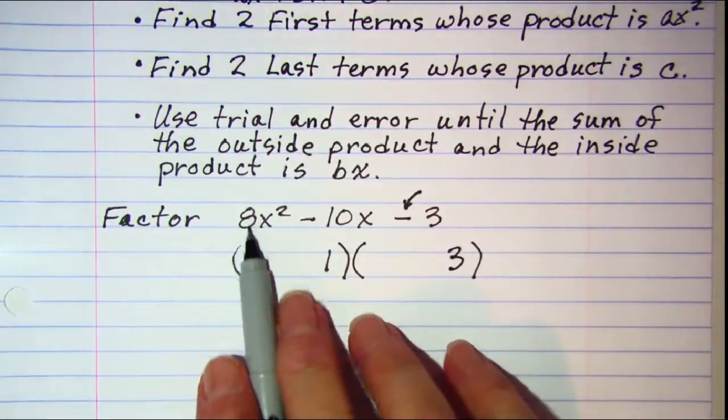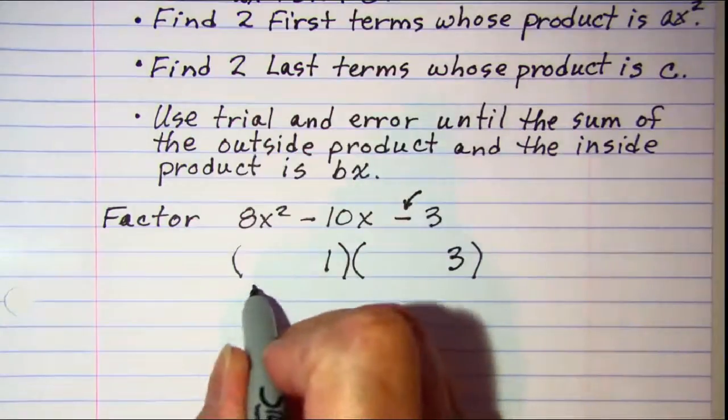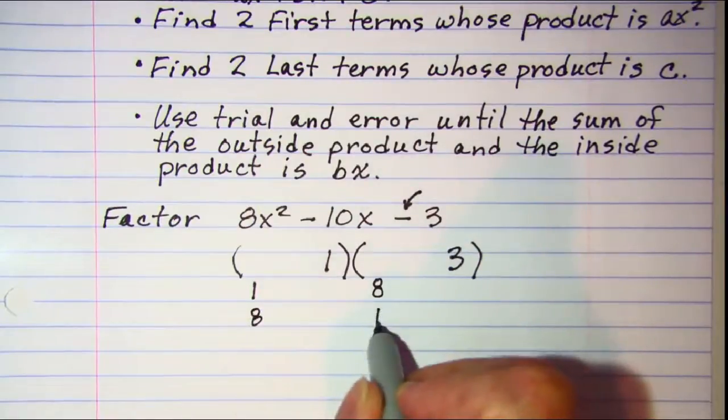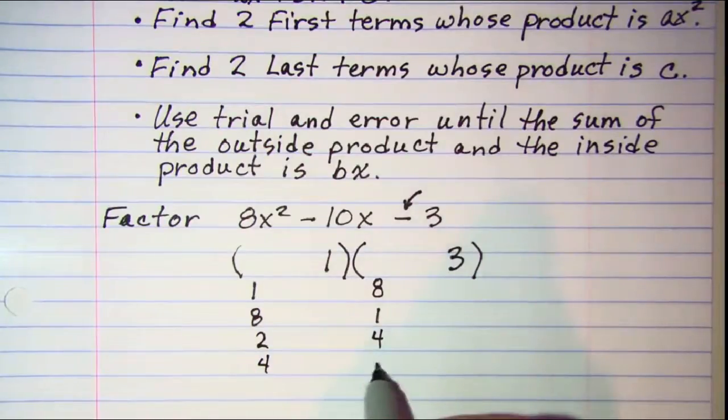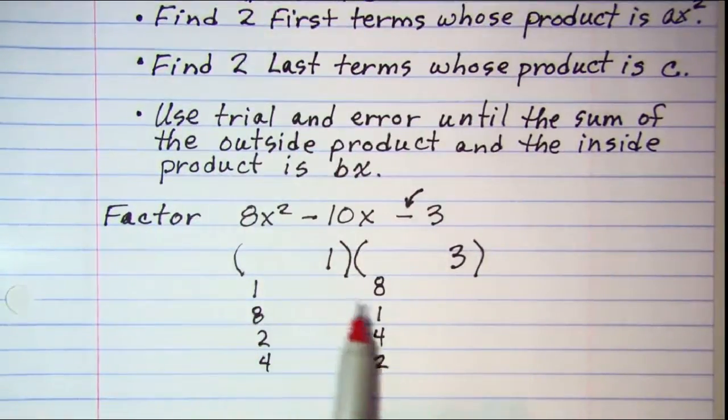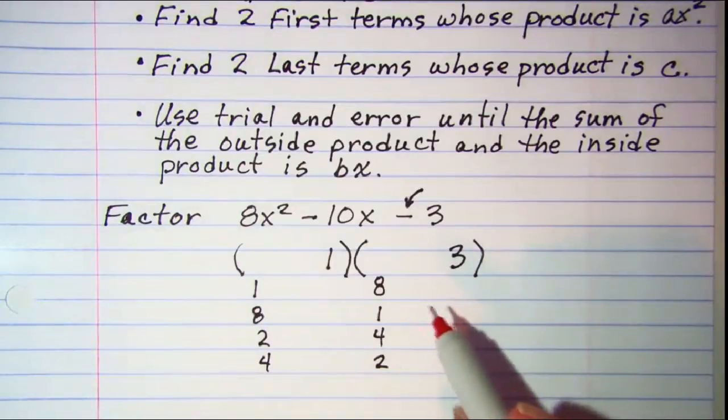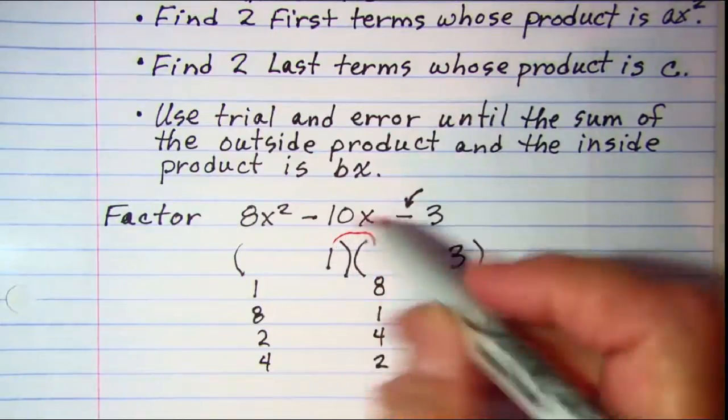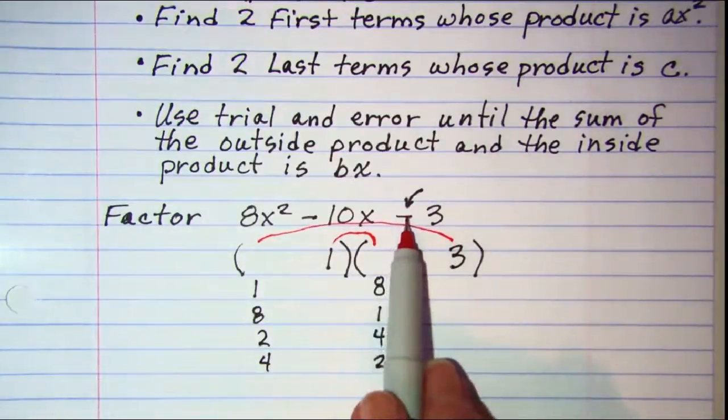So if I put in my factors for 8, I can use a 1 and an 8 or an 8 and a 1. I can also do 2 and 4, or 4 and 2. This part of the process I usually do in my head. I don't write these numbers down, but I wanted you to see what I was thinking. So what I'm going to do is look at the inner product and the outer product.